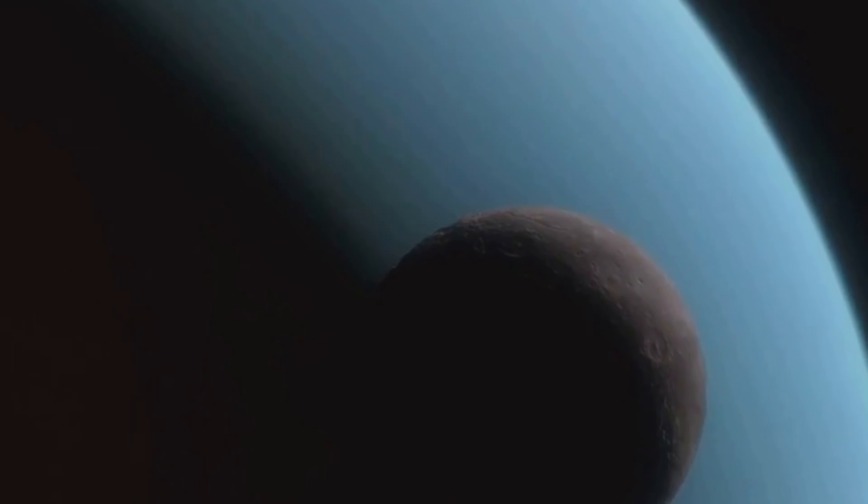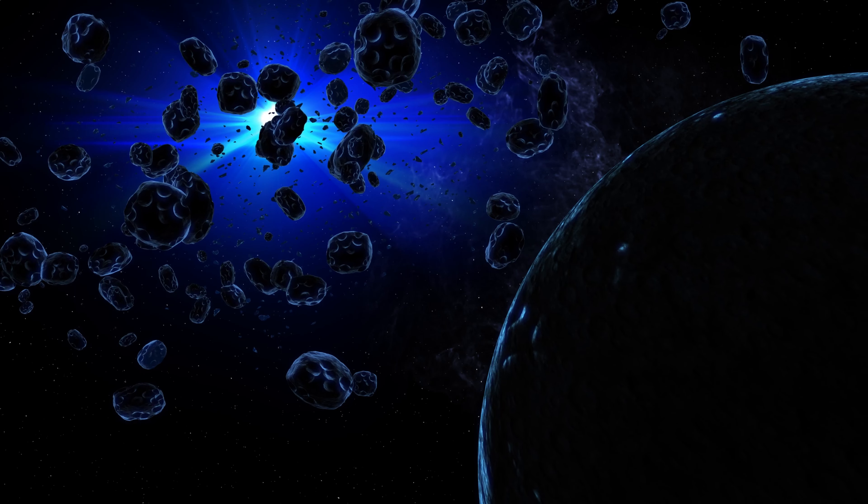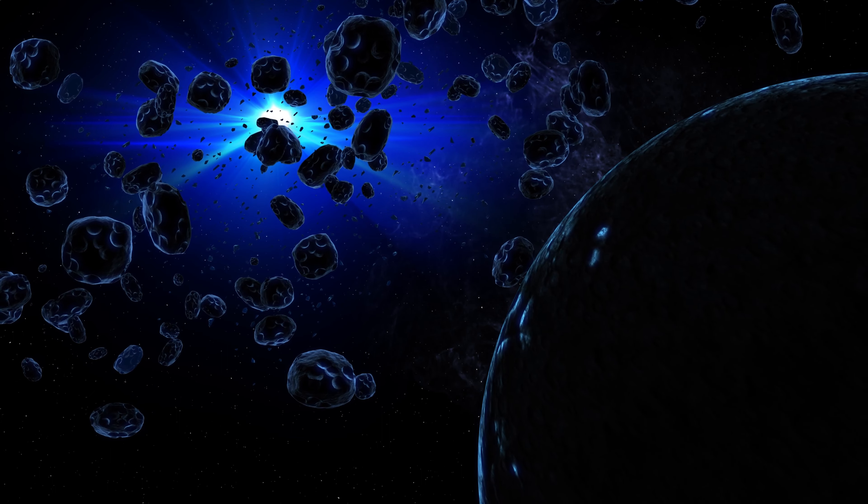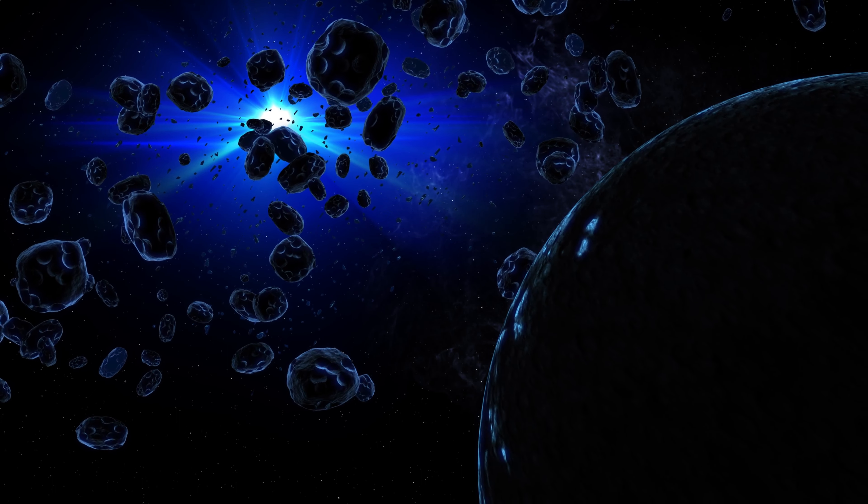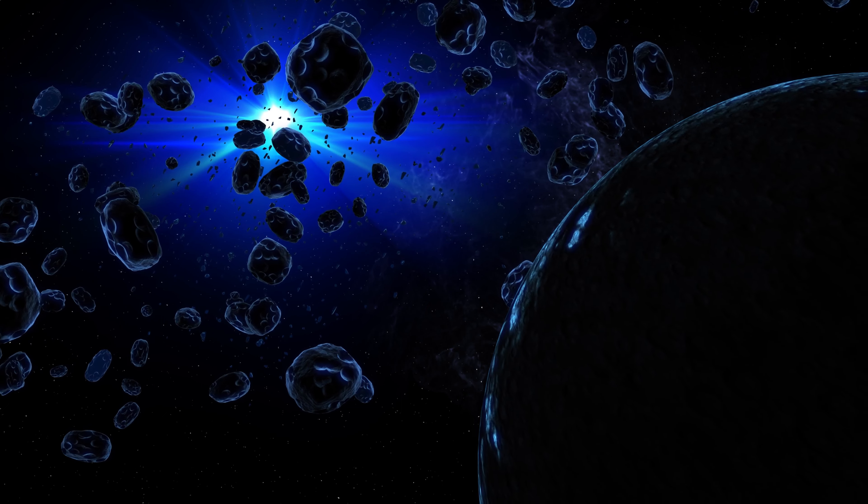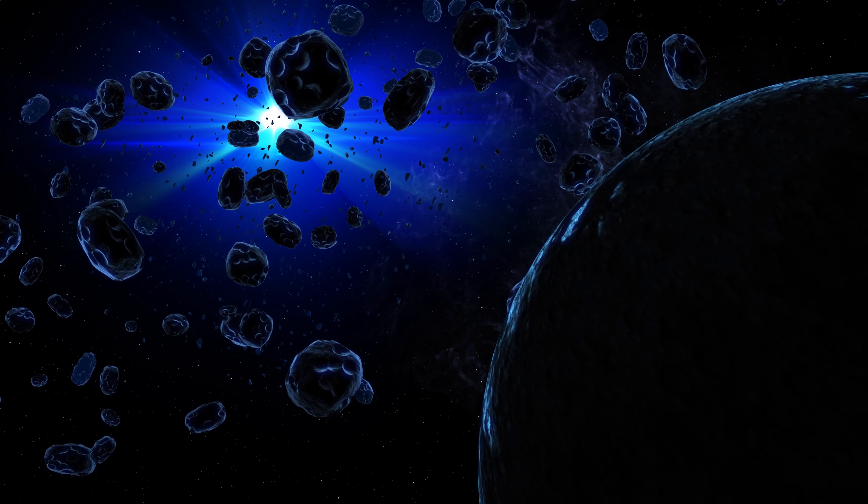Think about it. Our current models of the solar system's formation are based on the planets we know and observe. If there's an additional massive planet out there, we may need to revise these models. The presence of Planet X could provide the missing piece of the puzzle, helping us to better comprehend the complex processes that gave birth to our planetary neighborhood.